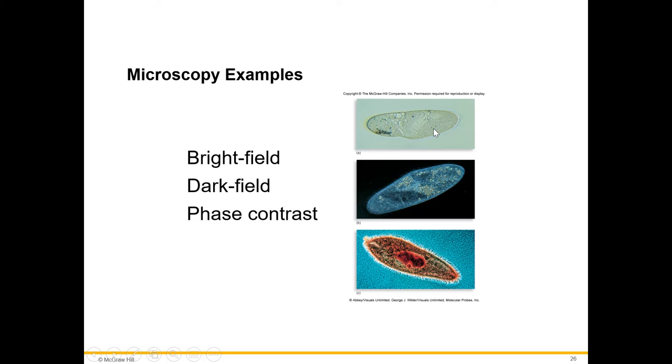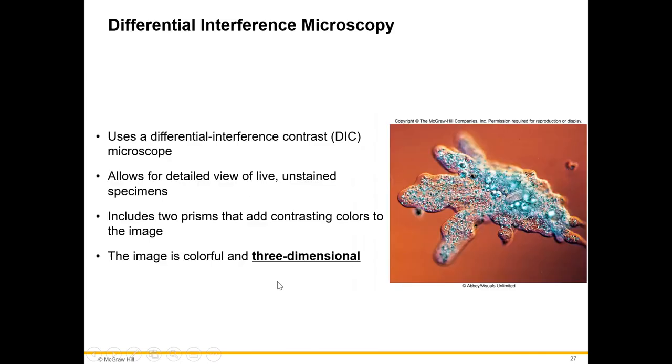In dark field, that's the opposite. In dark field, the background is dark and the organism is lighter. In phase contrast, different colors of light and different lights are used in order to cause the more dense items to appear darker in color. Differential interference microscopy uses two prisms that add contrasting colors to the image. This allows us to see a 3D image where closer objects are going to be in focus and farther objects are going to be out of focus, so the image ends up being colorful and three-dimensional.